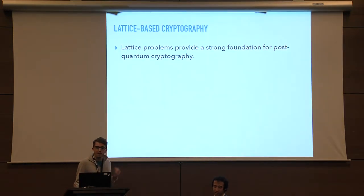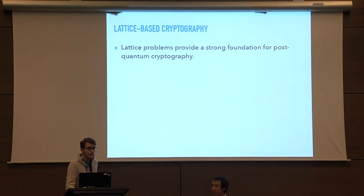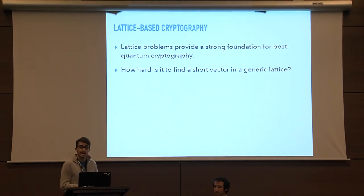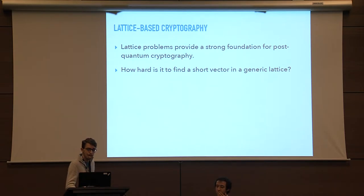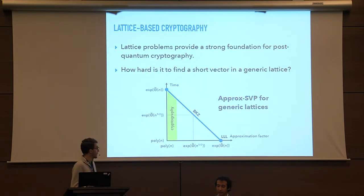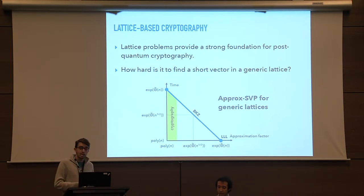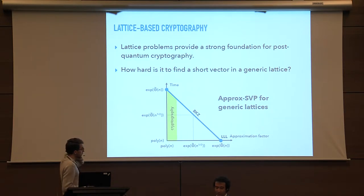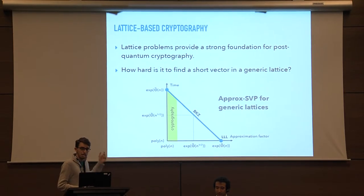By now I'm sure you're all familiar with the fact that lattice problems provide a strong foundation for post-quantum cryptography. I'm going to talk more specifically about the problem of finding short vectors in lattices. How hard is it to find short vectors in generic lattices? Well, it depends on how short you want it to be. In polynomial time, you can find an exponential approximation of the shortest vector using the LLL algorithm. And if you want a really good approximation, you can find a polynomial approximation — polynomial in n, the dimension of the lattice — in exponential time using the BKZ algorithm. BKZ also provides a trade-off between these two points.